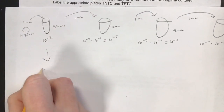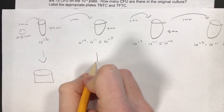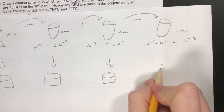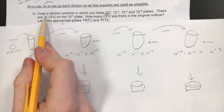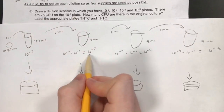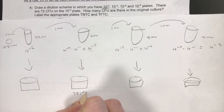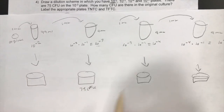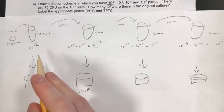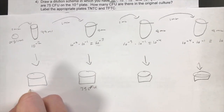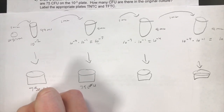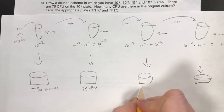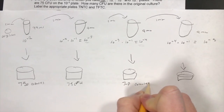Now we're also going to show the plates. We can just use rough sketches for these. We're given that we have 75 CFU, or colony forming units, on the 10 to the negative 3 plate — so here's 10 to the negative 3 and we're going to write down 75 CFU. Now we want to determine how many colonies are in the preceding one and each one after that. To go from 10 to the negative 3 to 10 to the negative 2, we're going to add a zero, so it's approximately 750 colonies.